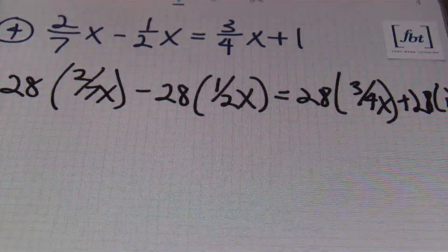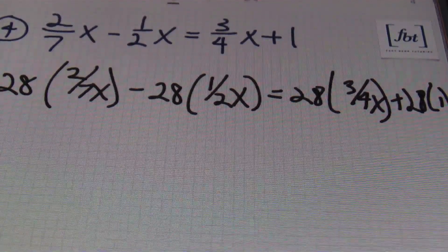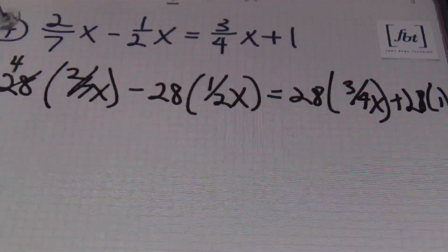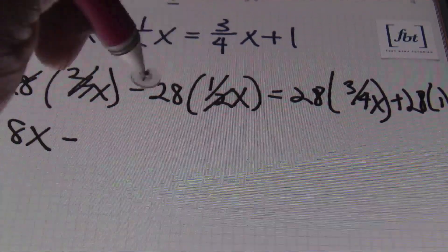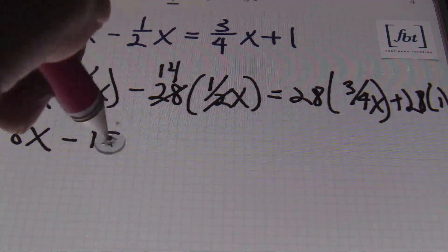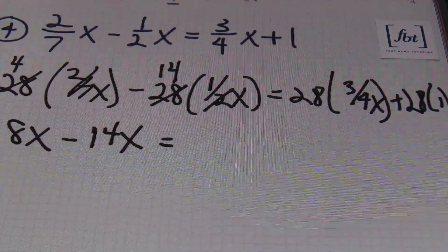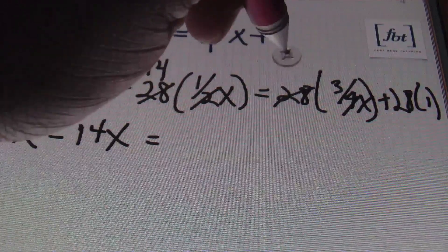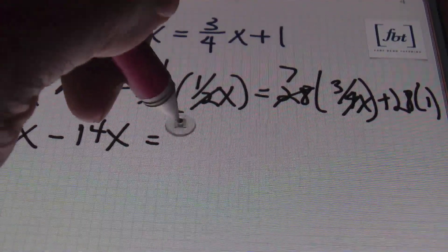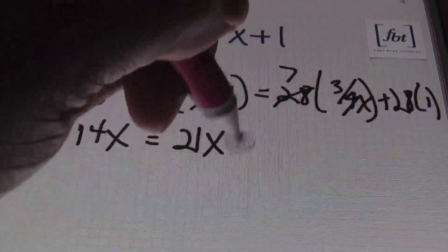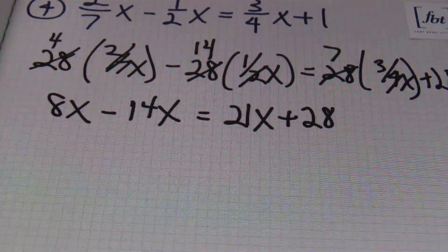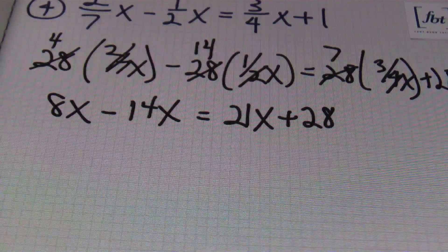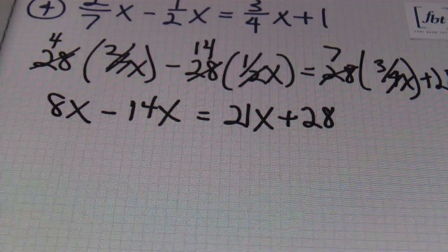I'll have 28 times two-sevenths x minus 28 times one-half x equals 28 times three-fourths x, and then 28 times one. Simplifying: seven goes into 28 four times, so four times two gives me eight x; two goes into 28 fourteen times, so that's 14x. On the right side, four goes into 28 seven times, so seven times three gives me 21x, plus 28 times one which is 28. So my equation is eight x minus 14x equals 21x plus 28.